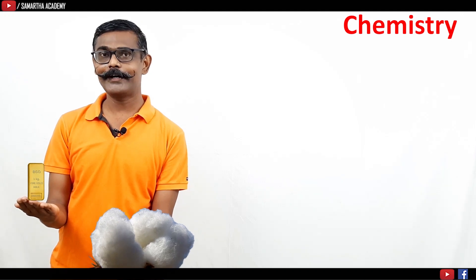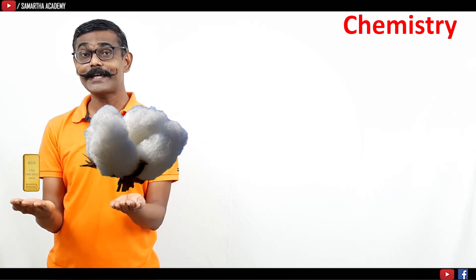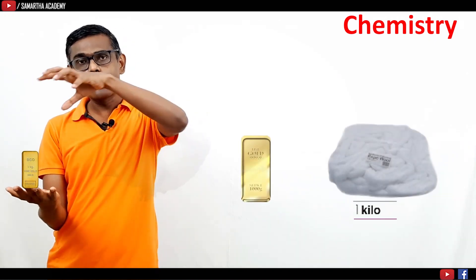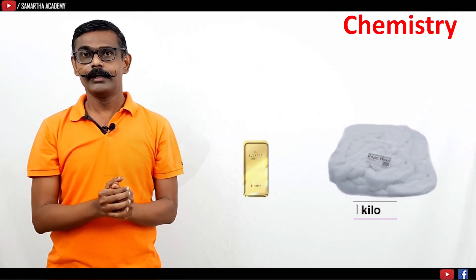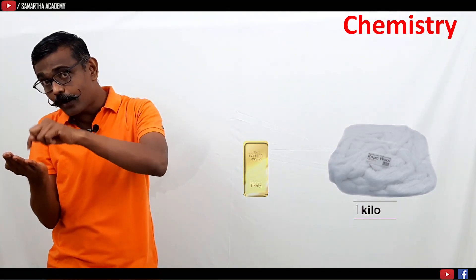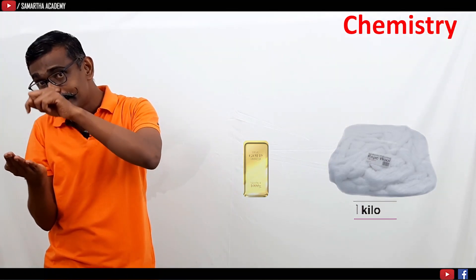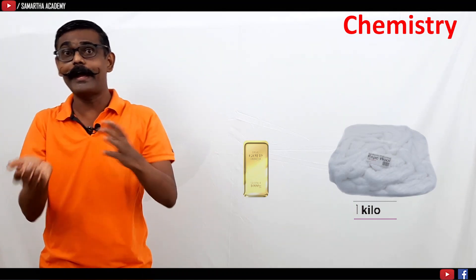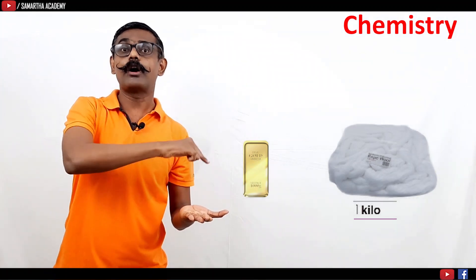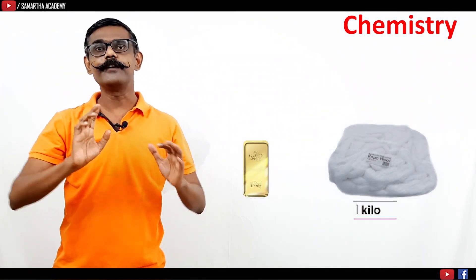What I said, 1 kg of gold and 1 kg of cotton both will weigh same. From weight quantity point of view, both are same. But from volume point of view, from material point of view, they may differ. Gold may be of this much size, but cotton will be in large quantity. Number of species present in the gold, I am talking about gold species, tiny, minute gold species present in this 1 kg of gold. And number of species present in the cotton respective chemical will be different.